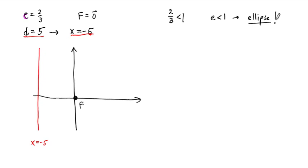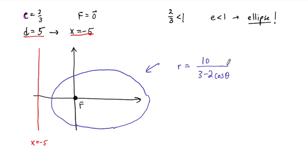And so this is going to be an ellipse with eccentricity 2 thirds. And this will trace out then a shape similar to this. And so there's the conic section given by R equals 10 over 3 minus 2 cosine of theta. The graph is not exact, but that's the general shape of this conic section.